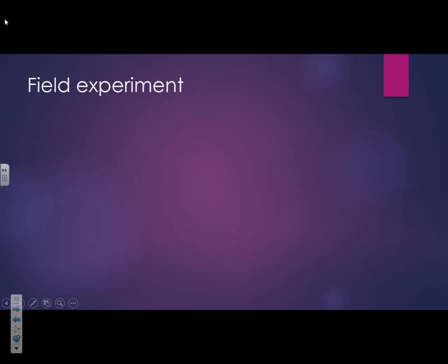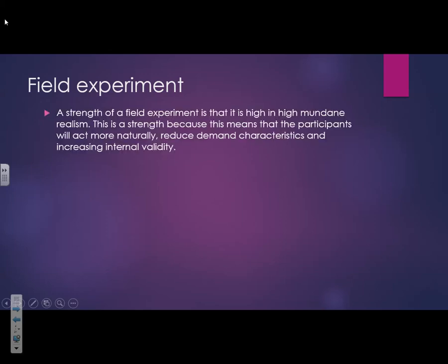Next: field experiments. A strength of a field experiment is that it's high in mundane realism. This is a strength because participants will act more naturally, reducing demand characteristics and increasing internal validity. Lab and field are completely opposite, so you can always evaluate them against each other. A weakness of a field experiment is that it lacks controls, which can increase extraneous variables. This is a weakness because we cannot be confident of cause and effect, and therefore it reduces internal validity.